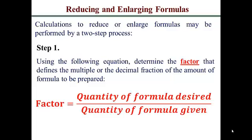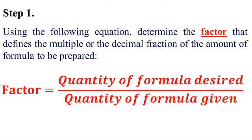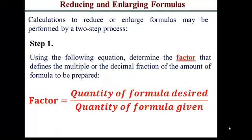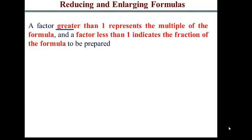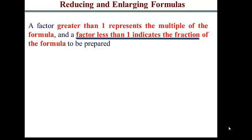You obtain this factor by dividing the quantity of formula desired — that would be the quantity of your compounded preparation — by the quantity of the formula given, which is the amount specified in your formula or formulation record. If you have a factor greater than one, it represents a multiple of the formula, meaning you're scaling up and need more of each ingredient. If the factor is less than one, you're reducing the formula and need less of each ingredient than specified.